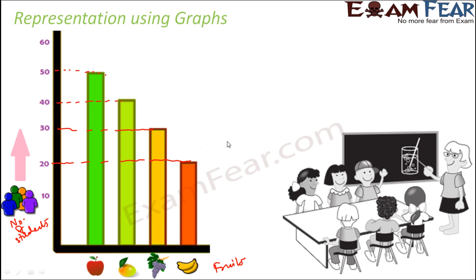then for each student, you will write, okay, this person likes apple, this person likes banana. Again, this person likes apple, this person likes grapes and so on. So to make the representation clearer and easier, graphical representation is often used. And this is known as a graph. So what you see on the screen is nothing but a graph.